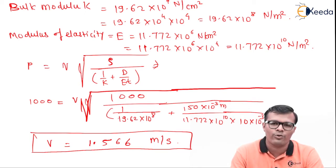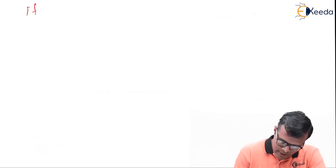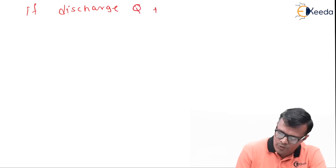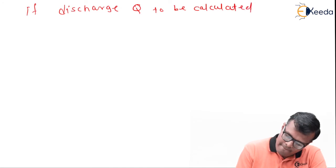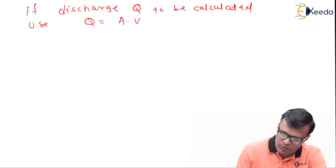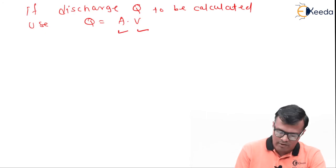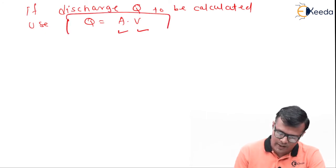If it is asked to calculate the discharge, then in that case, we have to use the formula Q = AV. So if discharge is to be calculated, use formula Q equal to area into velocity. Velocity is known to us. To calculate area, we will require diameter which is known to us. So we can calculate the discharge also. That's all. Thank you.